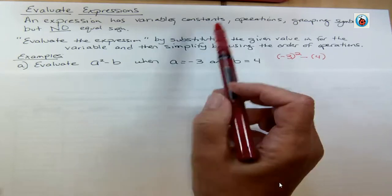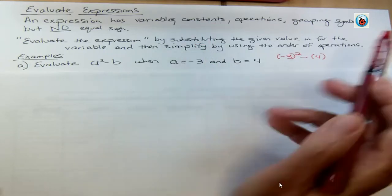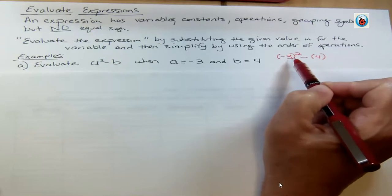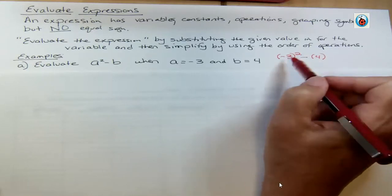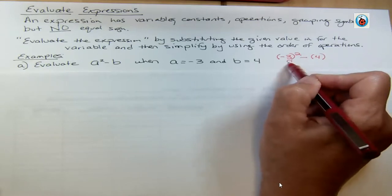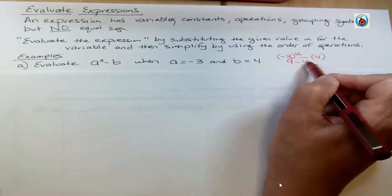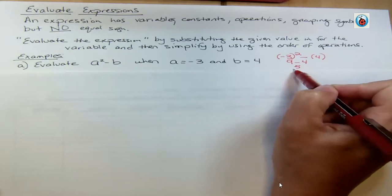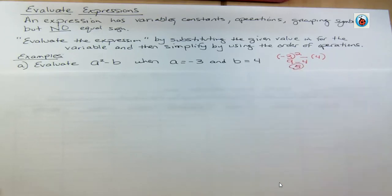Now I'm gonna simplify that. We first substituted, and now we're gonna simplify. Negative 3 to the second power is negative 3 times negative 3. Negative 3 is the base, so that gives us positive 9. And 9 minus 4 is 5. This is the evaluated expression.